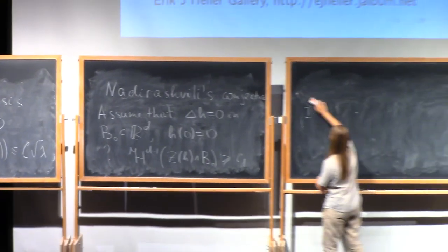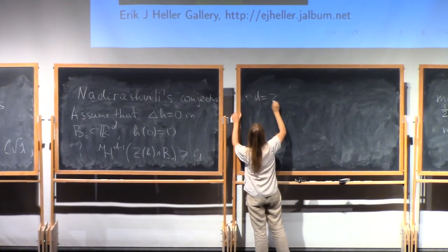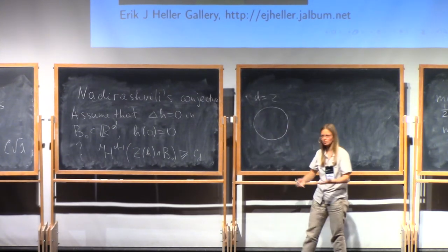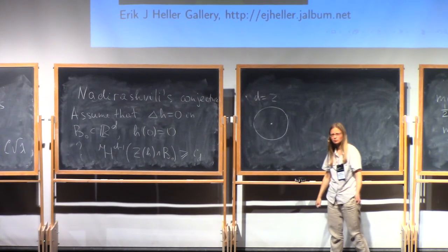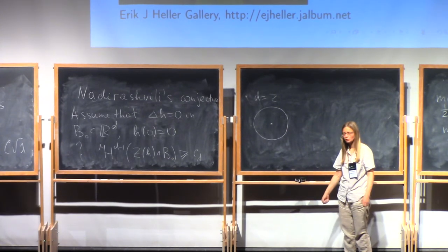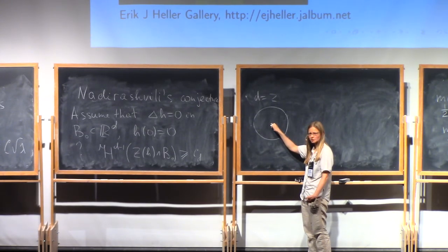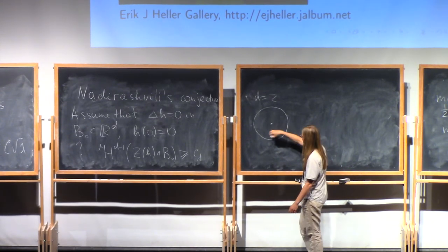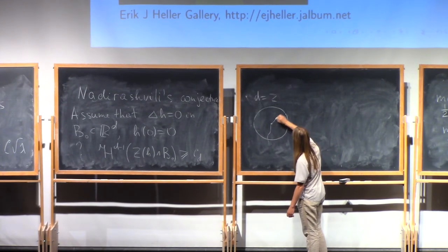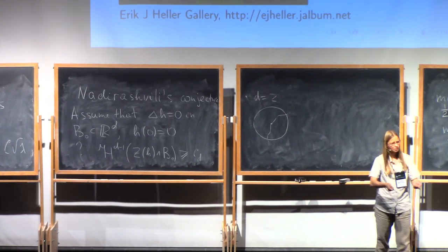In dimension two, we're looking at unit circle and harmonic function that is zero in the center. We know the maximum principle. So it's not a lonely zero. There should be a curve through the zero point. And this curve doesn't bound anything here. So this curve should leave the circle. So the length of this curve is definitely at least two.